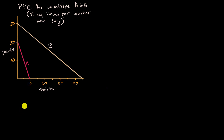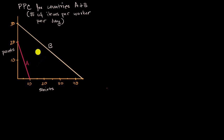Let's imagine a very simple world, as we tend to do in economics, that has two countries that are each capable of producing either pants or shirts or some combination. What we have here are the production possibility curves for each of those countries, shown in output per worker per day.